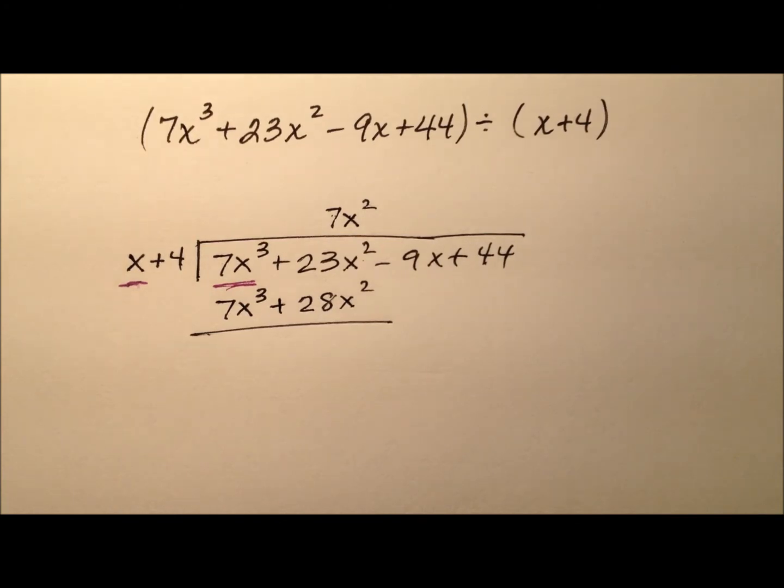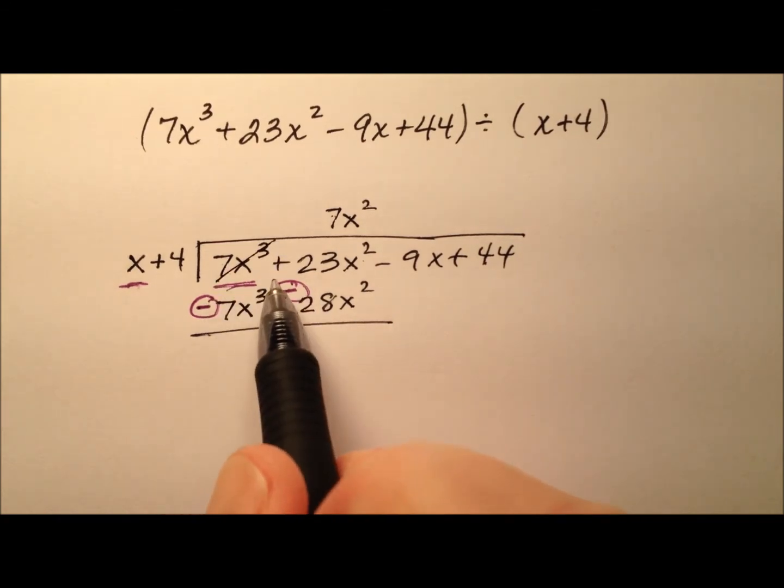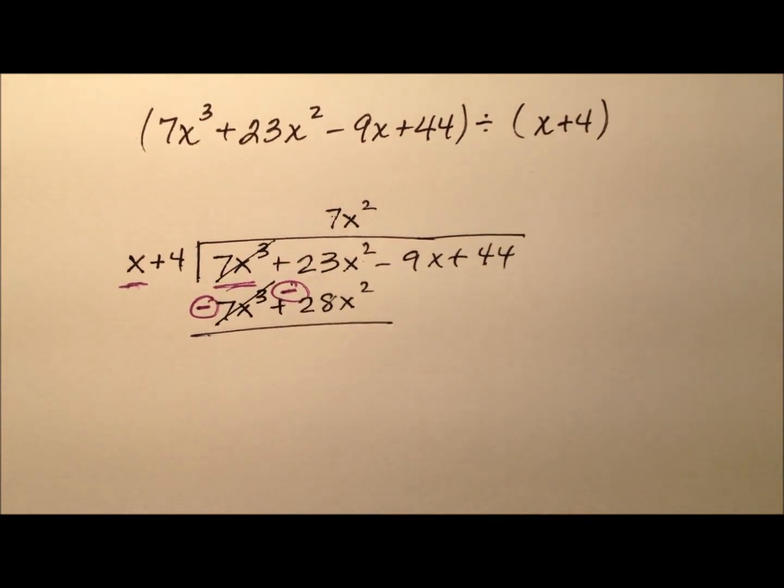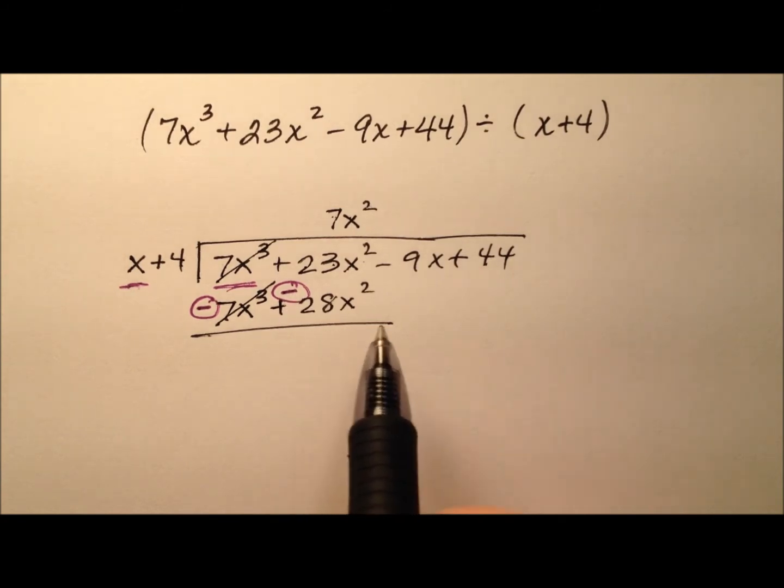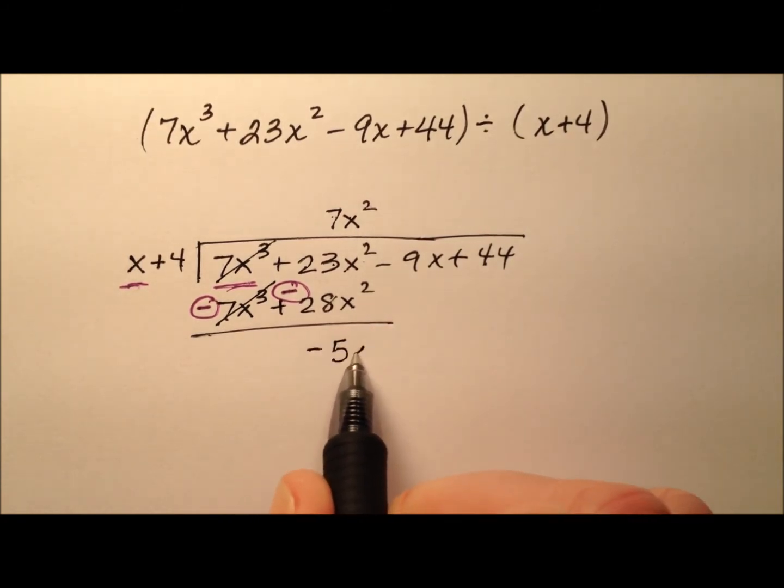And so in this algorithm now, I need to subtract. So I'm going to change the sign of these terms and add, and that's the same as subtraction. What I notice then is these leading terms cancel, and I have 23x squared minus 28x squared, so I'll have negative 5x squared.